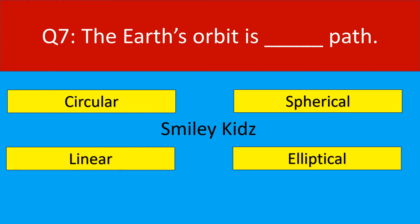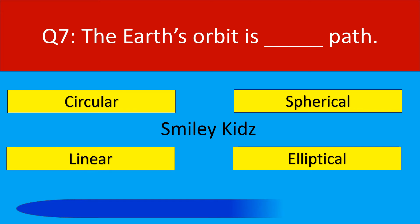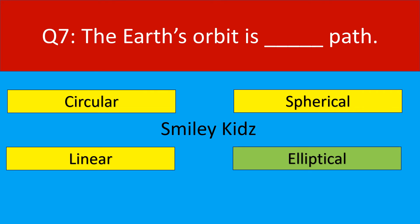Question number 7. The earth's orbit is a dash path. Your options are circular, spherical, linear, elliptical. Your time starts now. Your time is up. The correct answer is elliptical. The earth's orbit is an elliptical path.